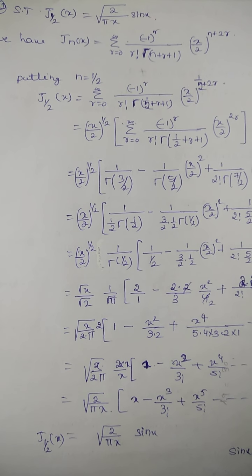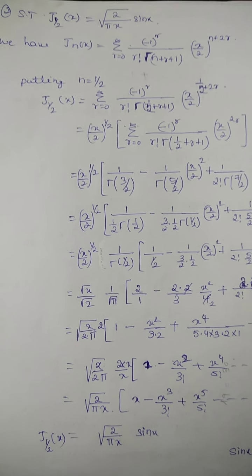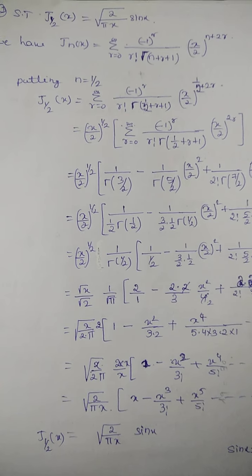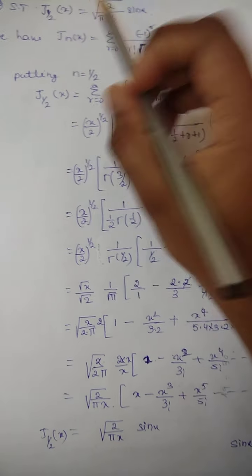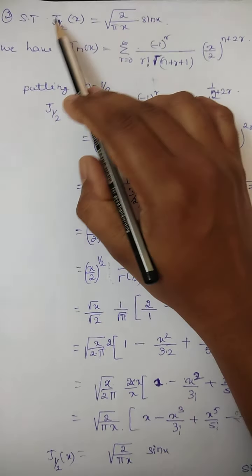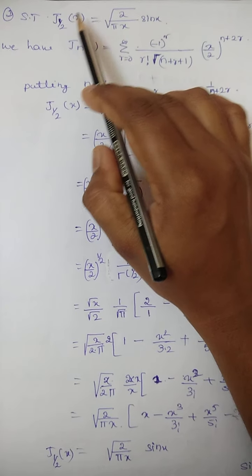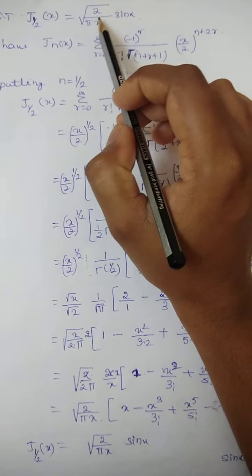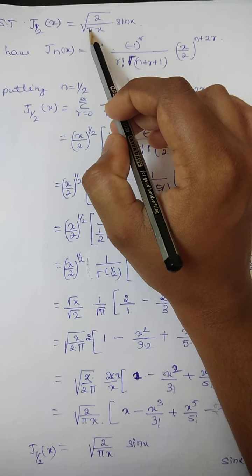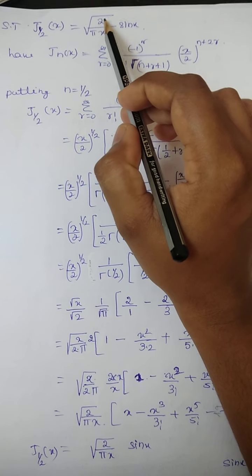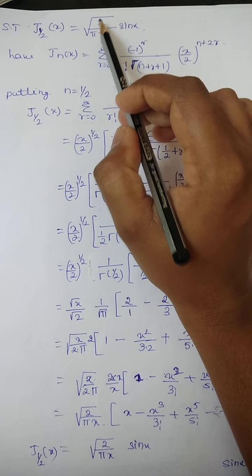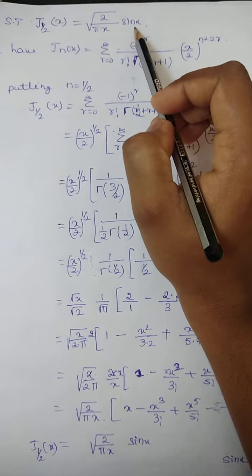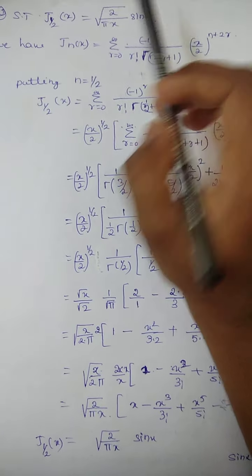Hello students, let us solve the problem using Bessel's equation. Show that J_{1/2}(x) is equal to √(2/πx) · sin(x).